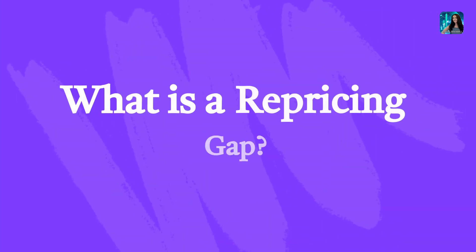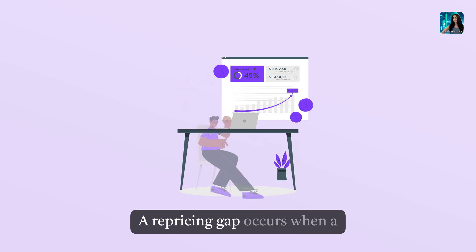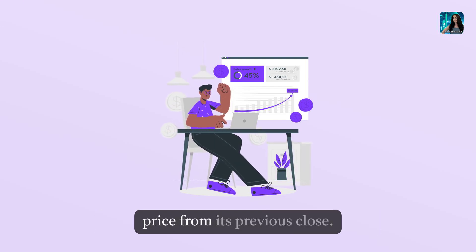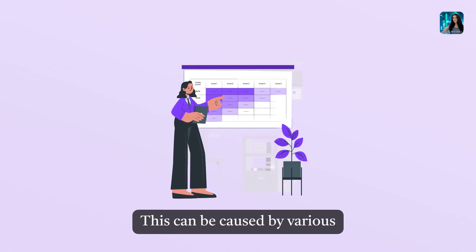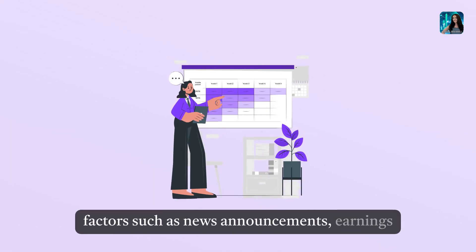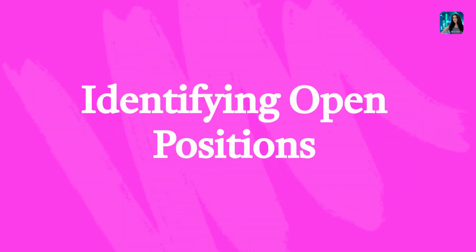What is a repricing gap? A repricing gap occurs when a security opens at a significantly different price from its previous close. This can be caused by various factors such as news announcements, earnings reports, or market sentiment shifts.